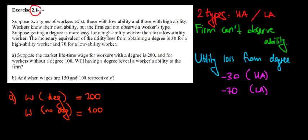Let's start working on question 2.1. We have two types of workers with low ability and with high ability. Workers know their ability, but the firm cannot observe it.